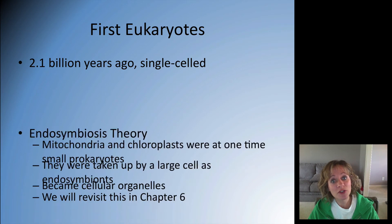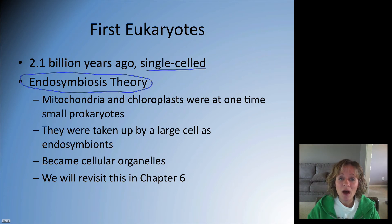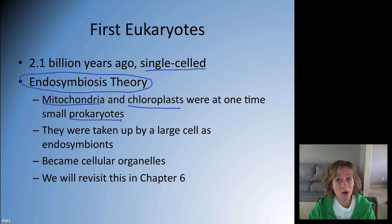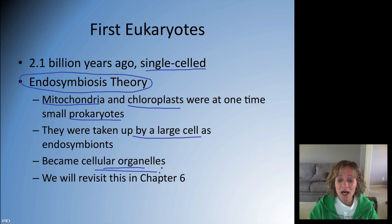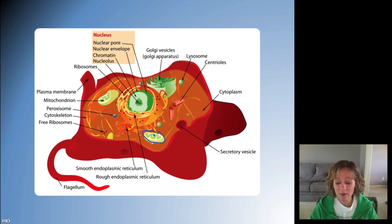Then bacteria and prokaryotes evolved into eukaryotes about 2.1 billion years ago — still single-celled, but now eukaryotic with a nucleus and membrane-bound organelles. We have the endosymbiosis theory, which explains the origin of organelles like mitochondria and chloroplasts. This theory holds that these organelles were once small prokaryotes living on their own, and were taken up by a large cell through endosymbiosis because it benefited both organisms. Over time, these became cellular organelles — we'll revisit this in Chapter 6 when we study cells.